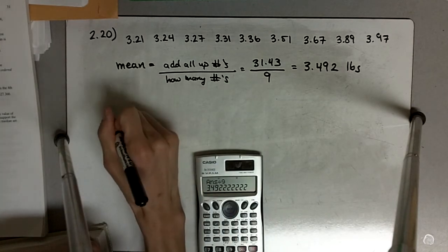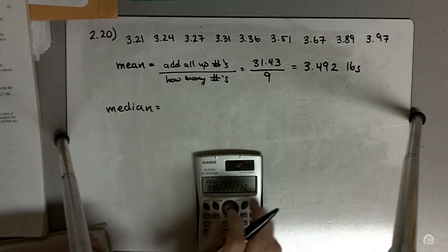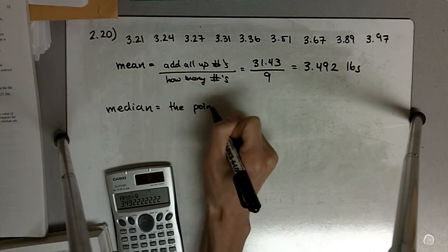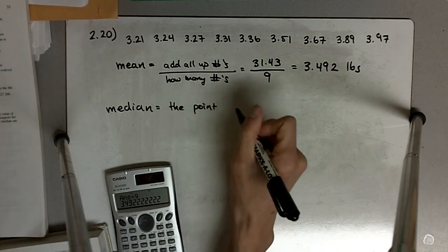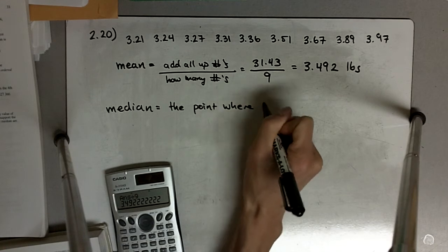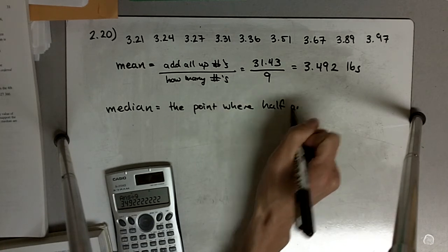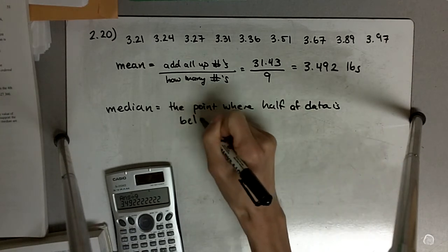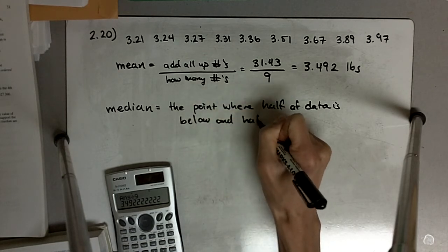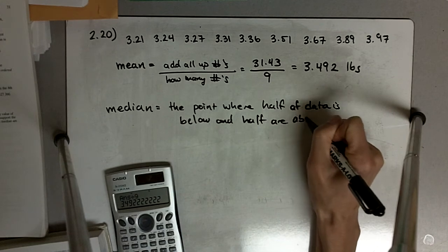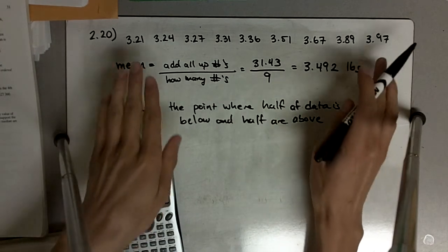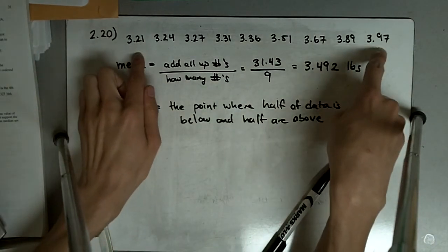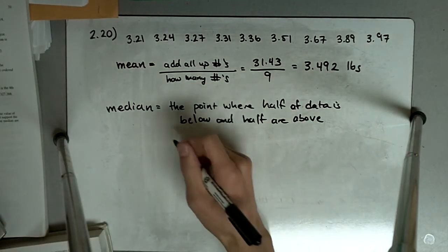For the median, the median is defined as the point where half the data is below and half are above. In this case, that will be the center number. So we can count in from the outside, which works fine with nine numbers. We go 1, 2, 3, 4, 5 — and we end up with 3.36.